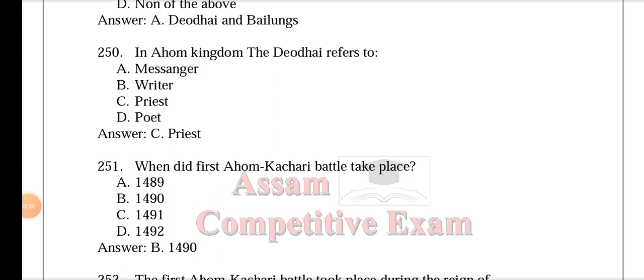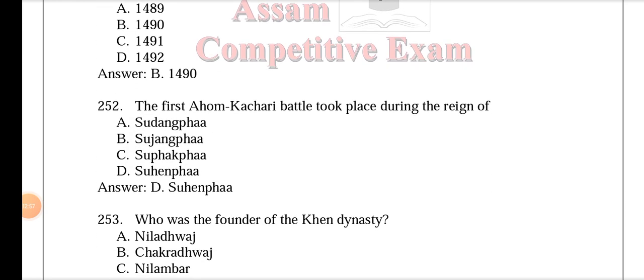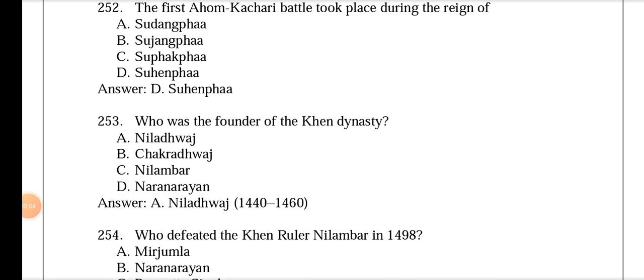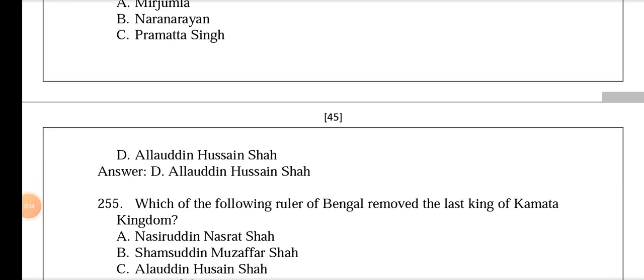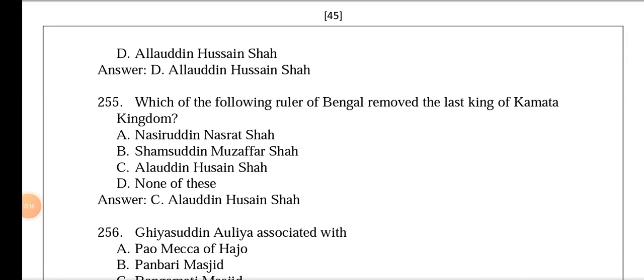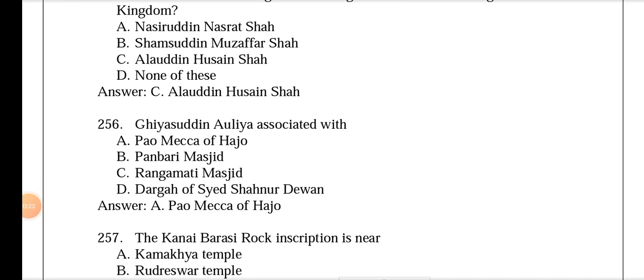The first Ahom-Kachari battle took place in 1490, during the reign of Suhenfa. The founder of the Khen dynasty was Nila Dhuaj. The Khen ruler Nilambar was defeated in 1498 by Alauddin Hussain Shah. Alauddin Hussain Shah, the ruler of Bengal, removed the last king of the Kamata kingdom. Yasudin Aulia is associated with Poa Makkah of Hajo, which is considered one-fourth of Makkah.